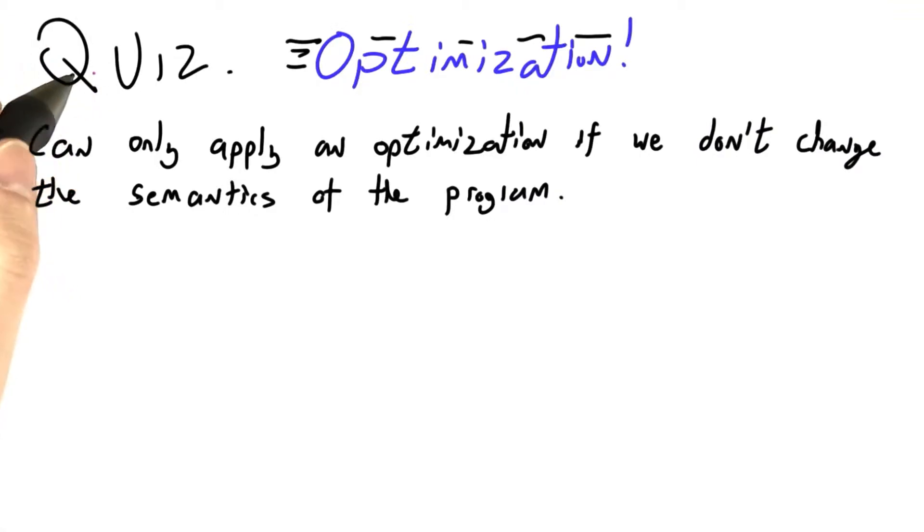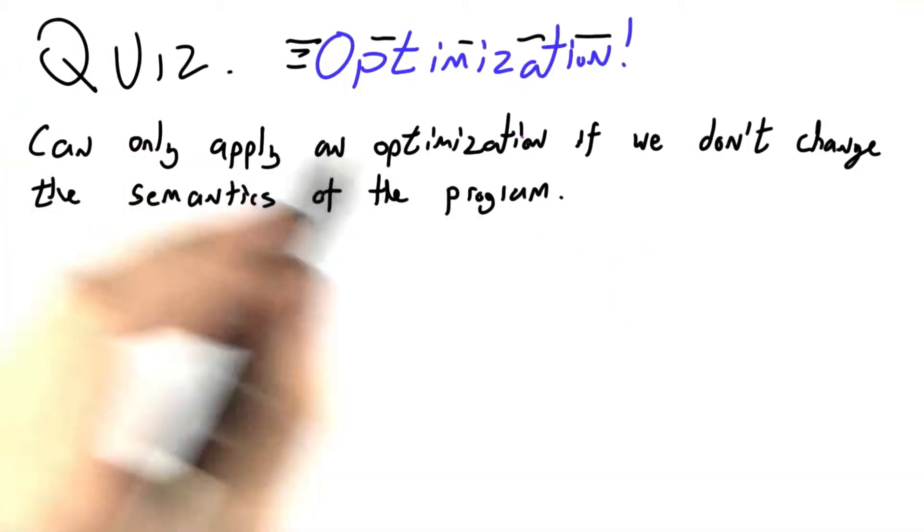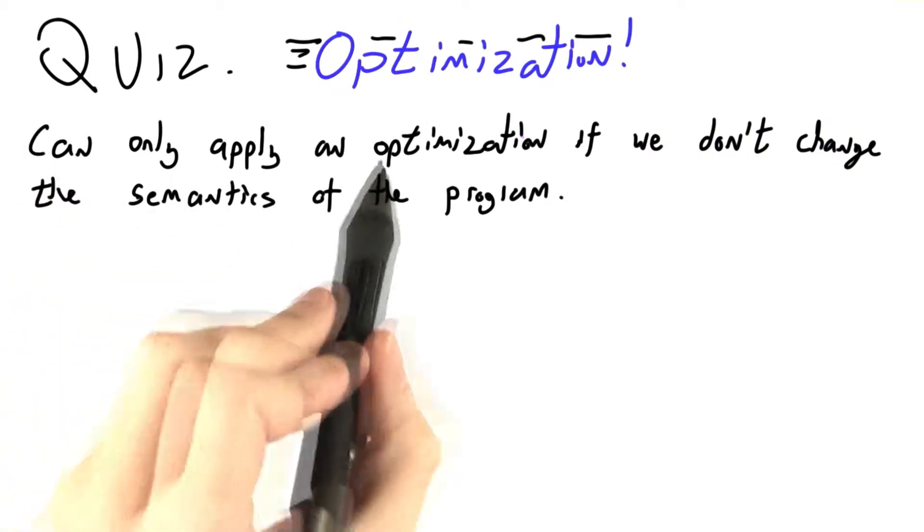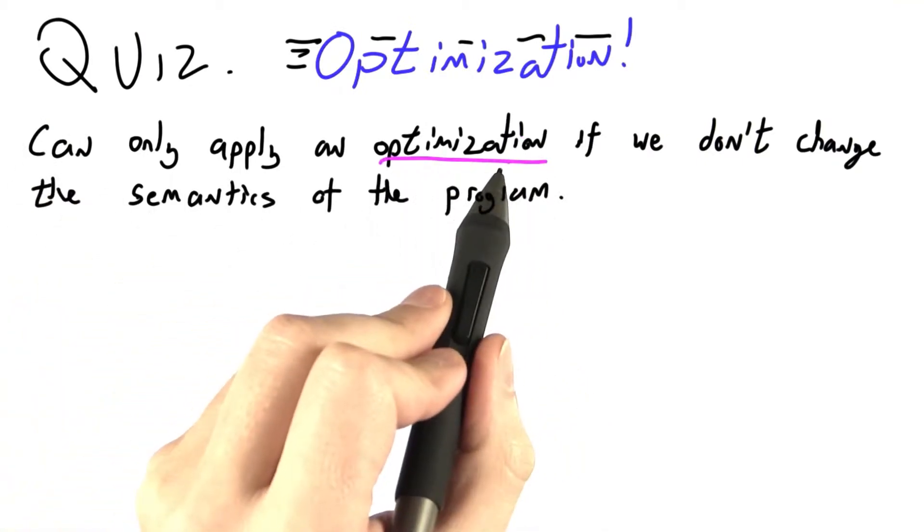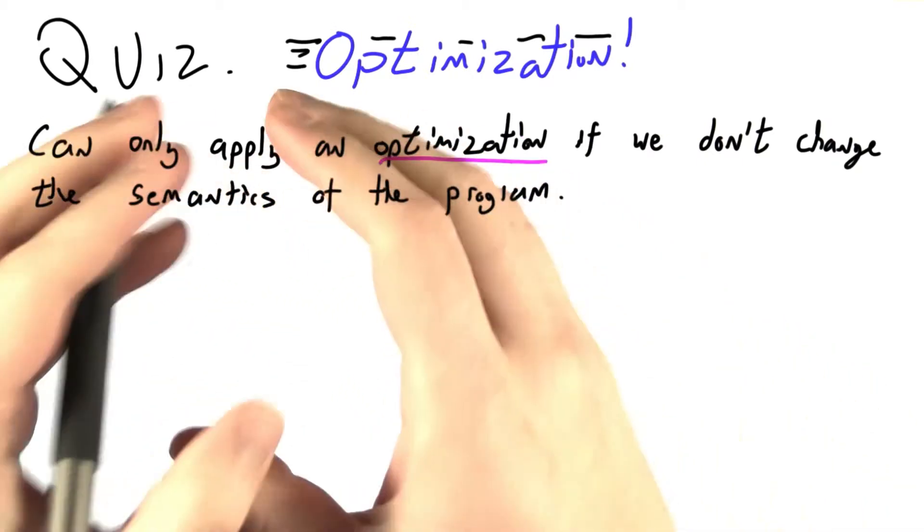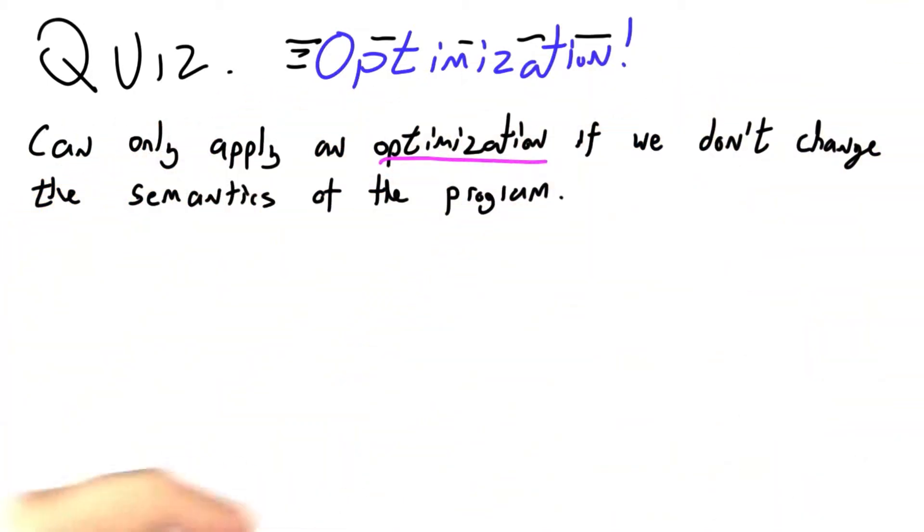Alright, for our last big review question, let's delve into optimization, making programs faster. And remember that we can only apply an optimization, that is we can only replace one subtree of a program with another, if we don't change the semantics, the meaning, the answer of the program.